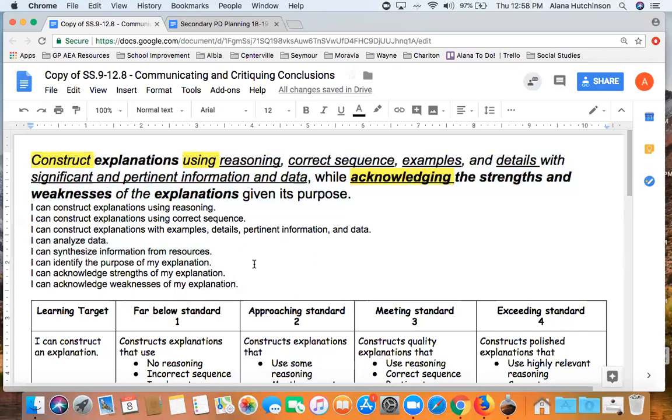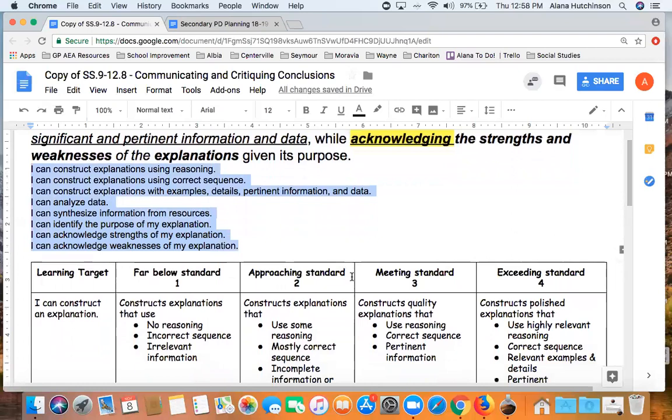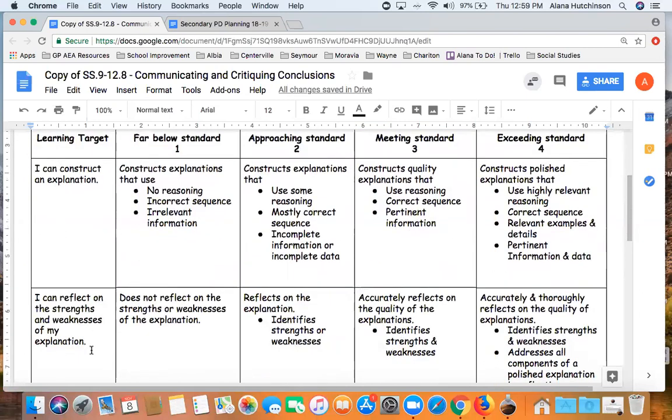I go through and start with looking at my learning targets and think about what are some of the big learning targets that I need to make sure I'm addressing on a rubric. Something that stands out to me is that a big piece of this standard is constructing explanations, but another piece is acknowledging the strengths and weaknesses of the explanation. So I actually decided that's two different separate skills, so I would create a rubric for both of those.